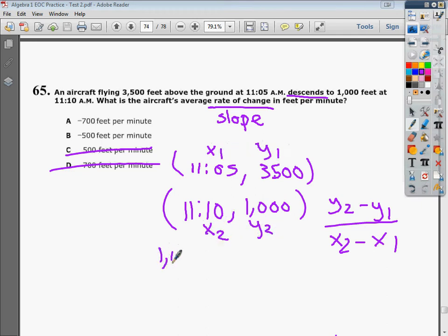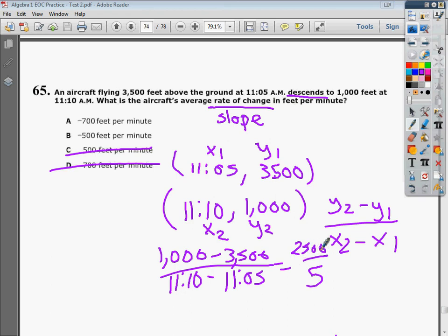So my y2 would be 1,000 minus 3,500 over 11:10 minus 11:05. Well, I know for a fact that 11:10 to 11:05 is five minutes. And I also know that 1,000 minus 3,500 is 2,500.